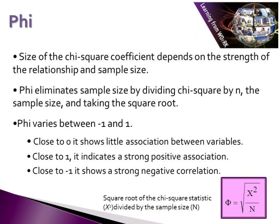Phi varies between minus one and one. Close to zero, it shows little or no association between variables. Close to one, it indicates a strong positive association. Close to minus one, it shows a strong negative correlation.